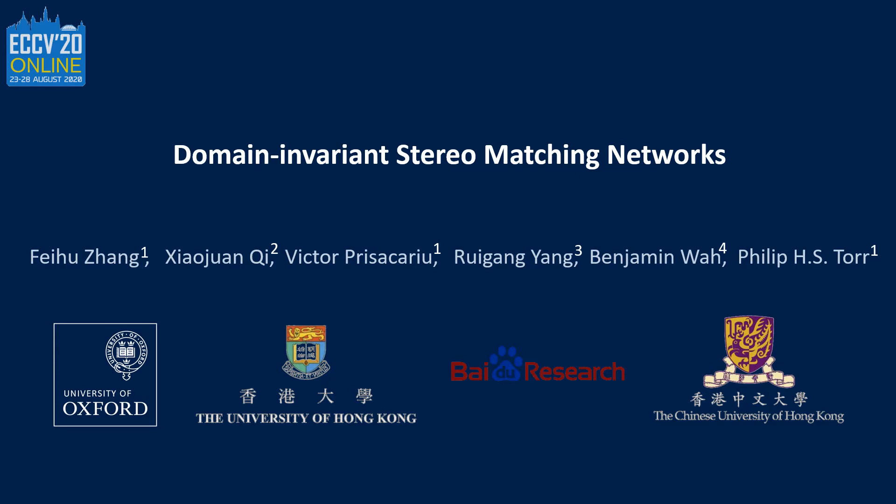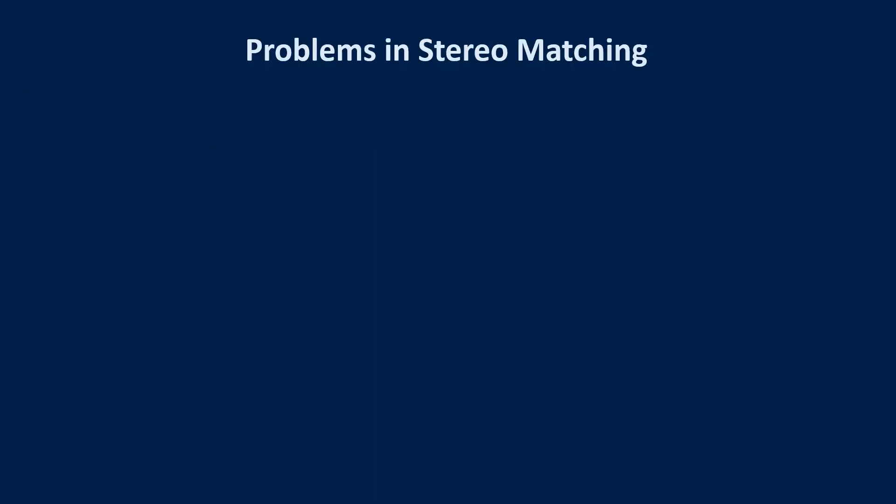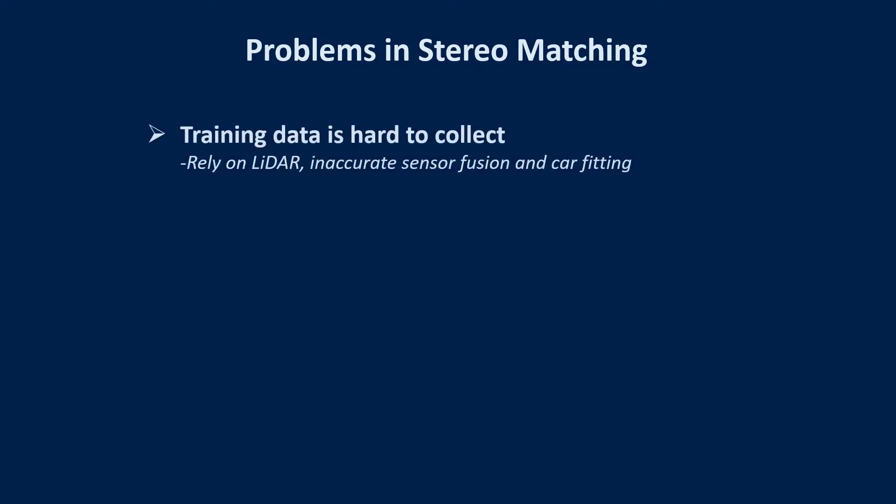This is the oral presentation of our paper, Domain and Variant Stereo Matching Networks. For stereo matching, training data with accurate depth ground truths are always hard to collect. This makes it hard to train accurate stereo matching networks.